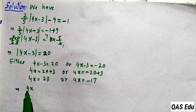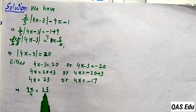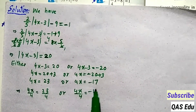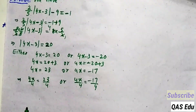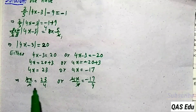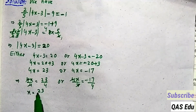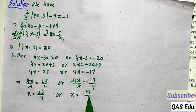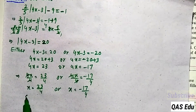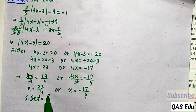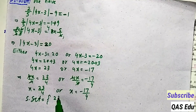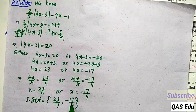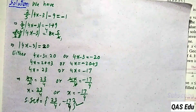Divide both equations by 4. The 4s cancel: x equals 23 divided by 4. For the other equation: x equals minus 17 divided by 4. Solution set has two values: 23 divided by 4 and minus 17 divided by 4. This is the solution set for the given absolute value equation.